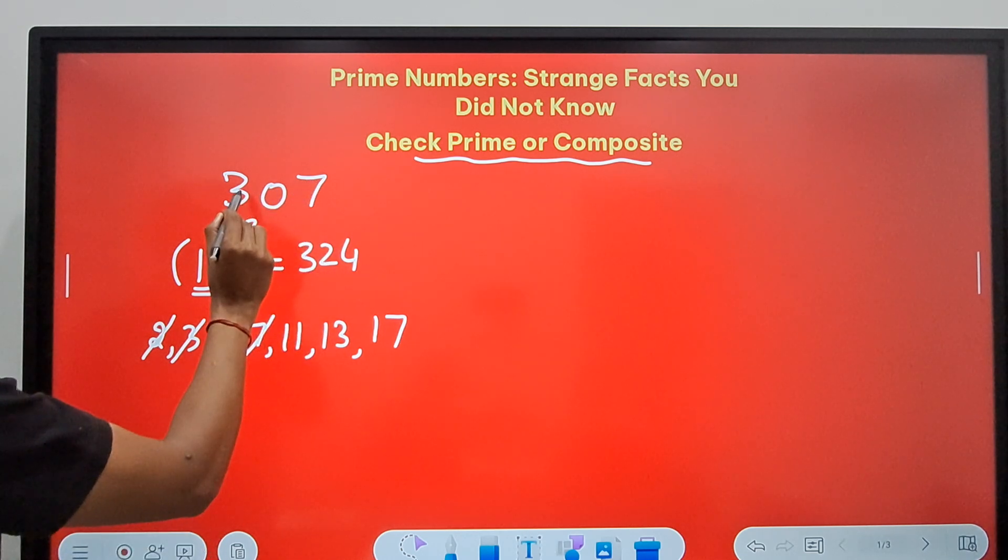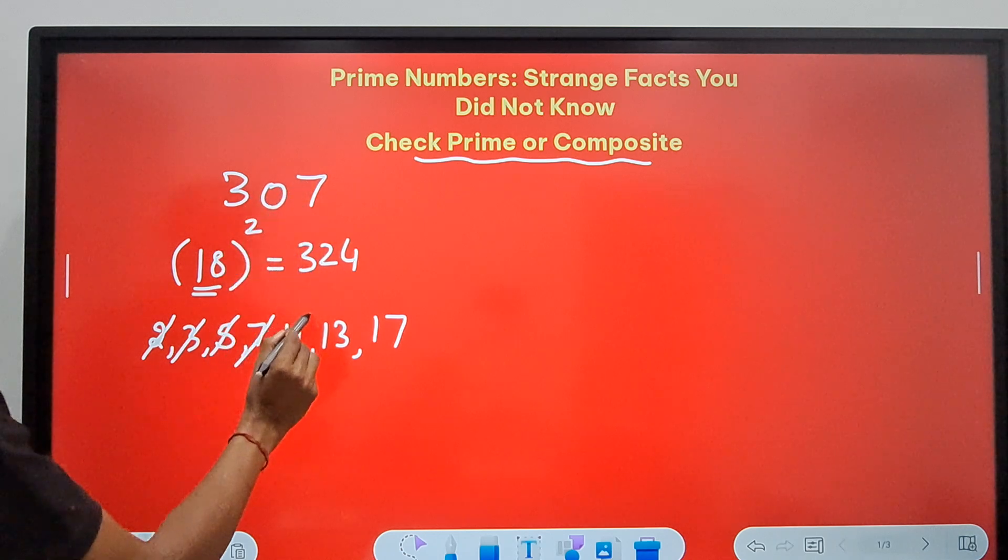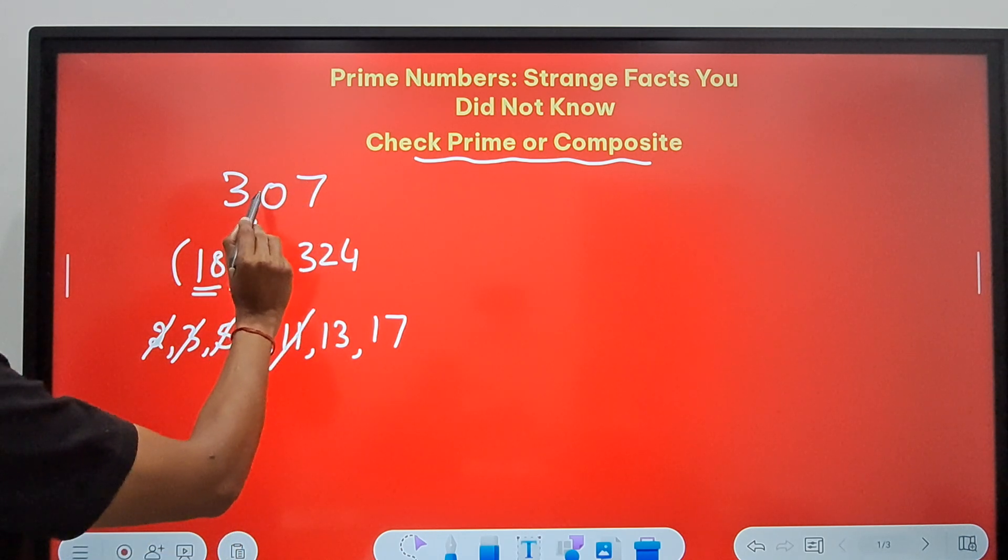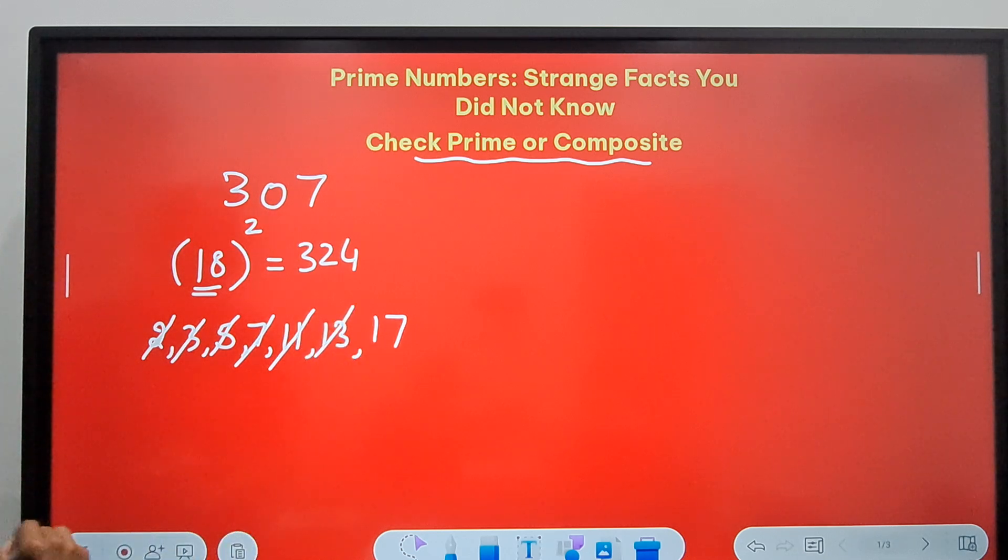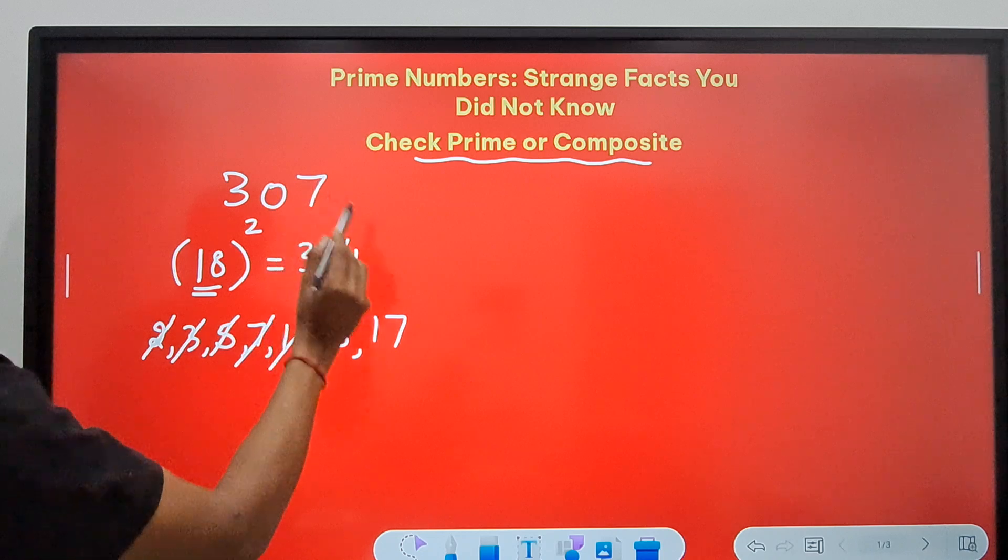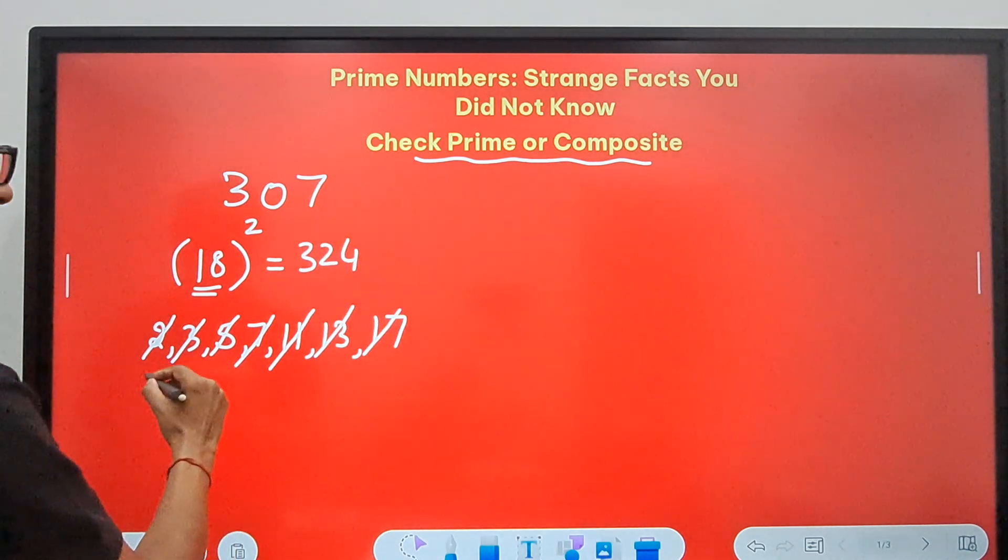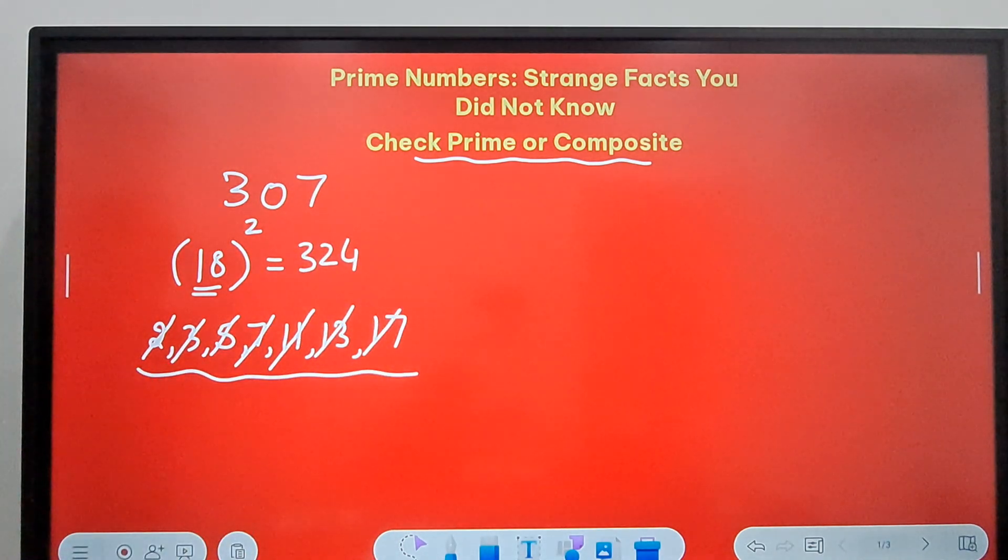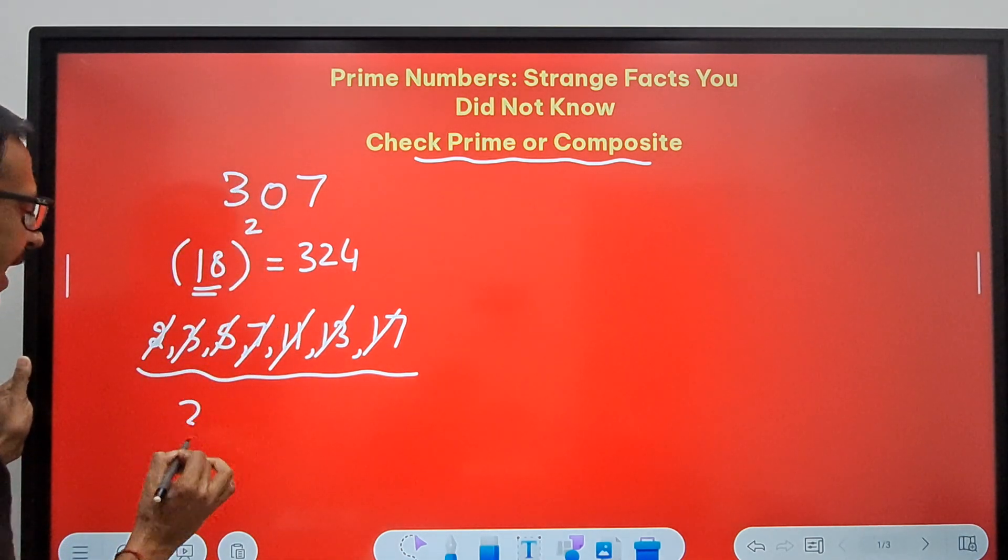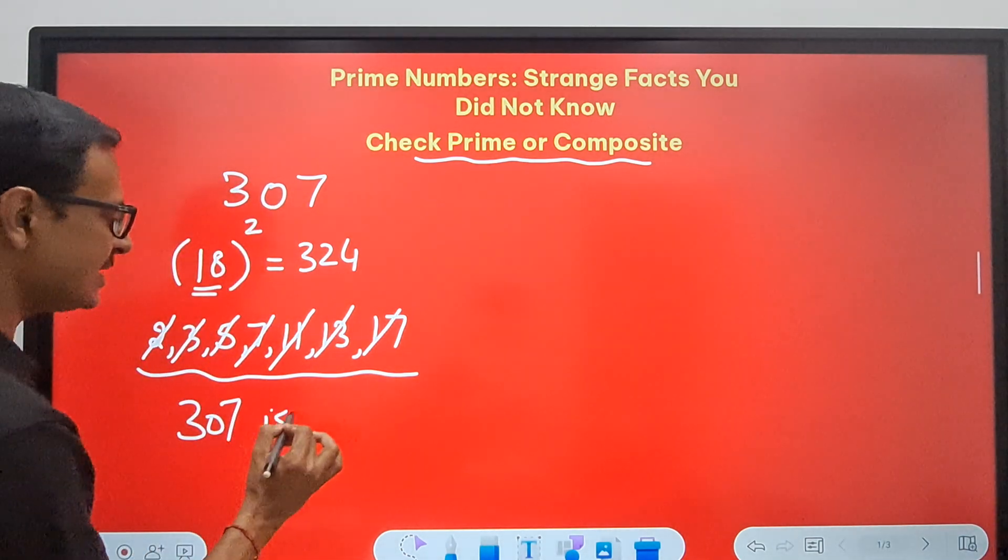For 11, 11 times 2 is 22, then 87, not divisible. For 13, 13 times 2 is 26, so 47, not divisible. And 17, 17 times 1 is 17, so 137, not divisible. That means none of these prime numbers is a factor of 307, and so we can safely say that 307 is prime.